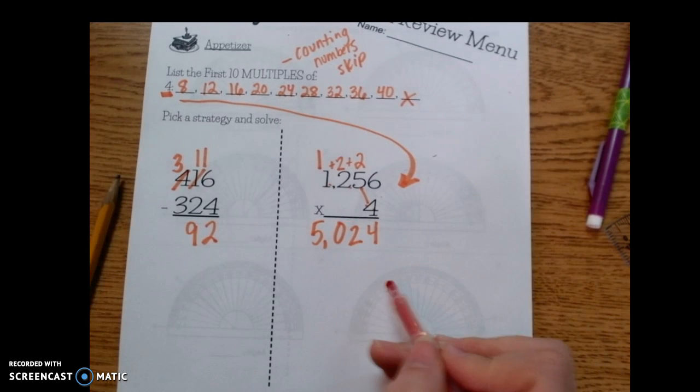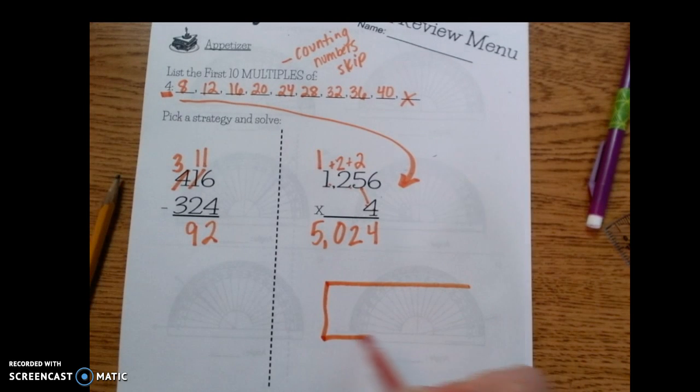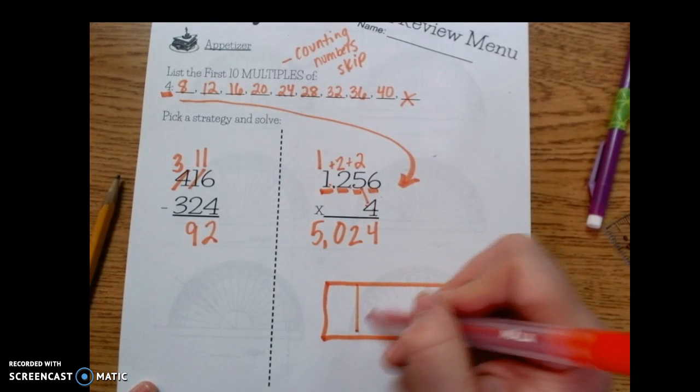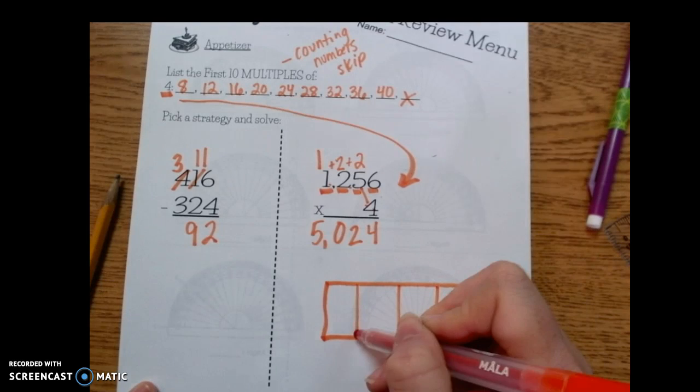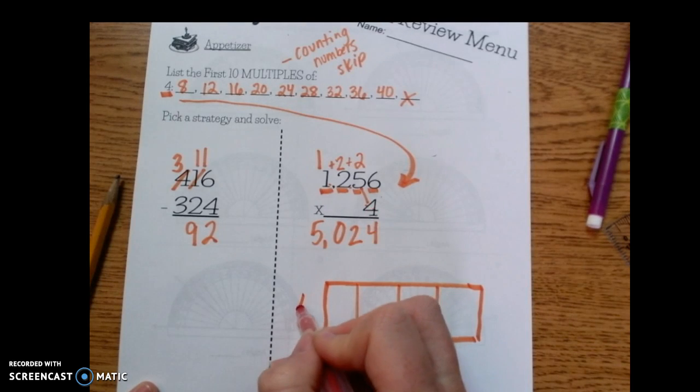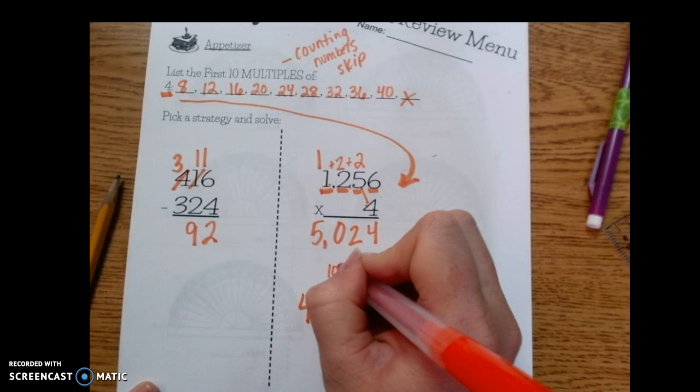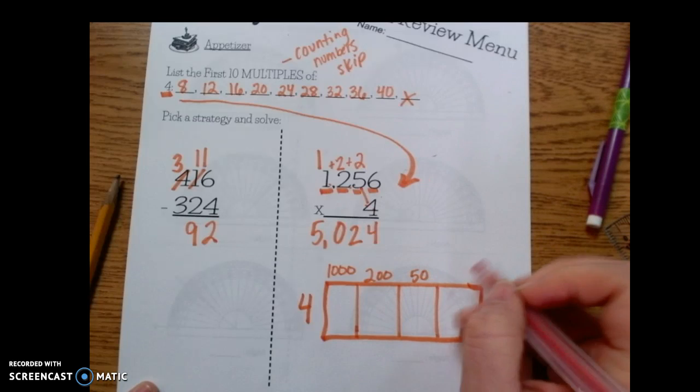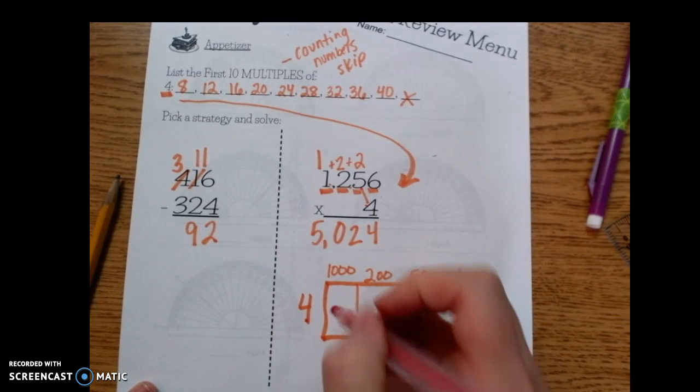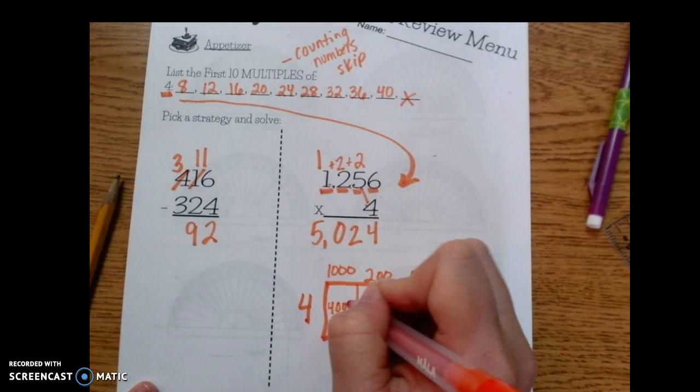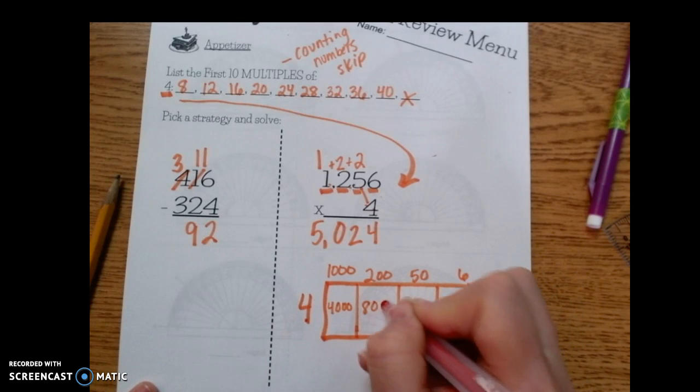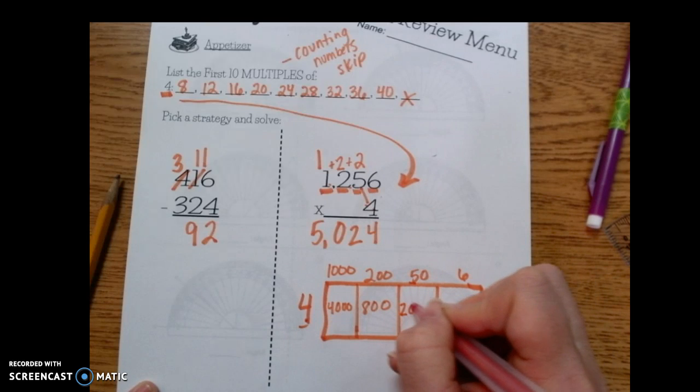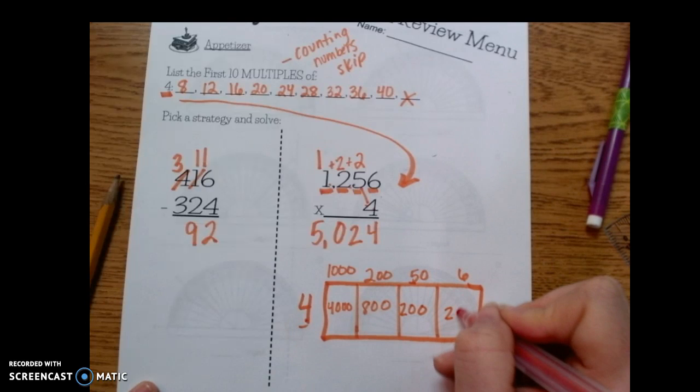If I were to do the area model I would draw a quick rectangle. I would split it into 4 because I have 4 place values. I would put my 4 over here, 1,000 here, 200 here, 50 here, and 6 here. I know that 4 times 1,000 is 4,000. 4 times 200 is 800. 4 times 5 is 20 plus 1,0. 4 times 6 is 24.